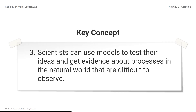Key Concept 3: Scientists can use models to test their ideas and get evidence about the processes in the natural world that are difficult to observe. Remember that Gurria's Venus model helped him to get evidence about how landforms on Venus were formed. He could not have gathered this evidence without using a model.